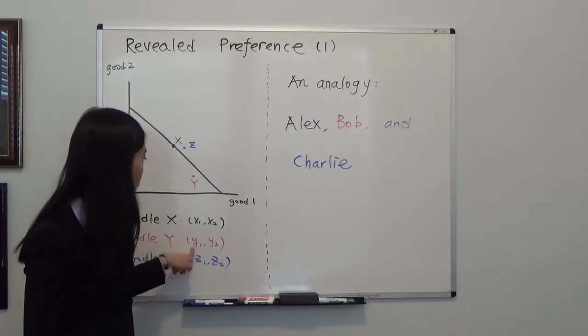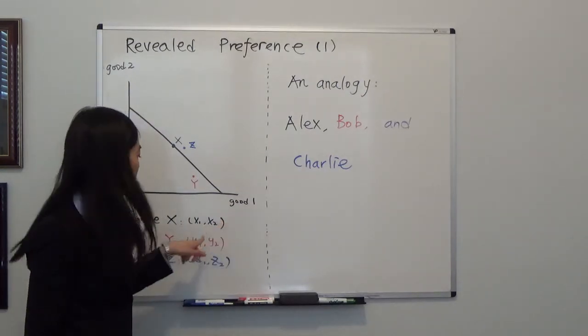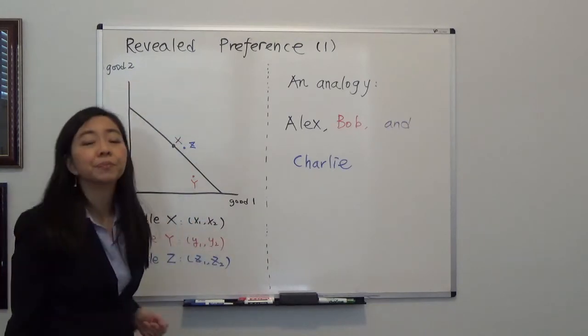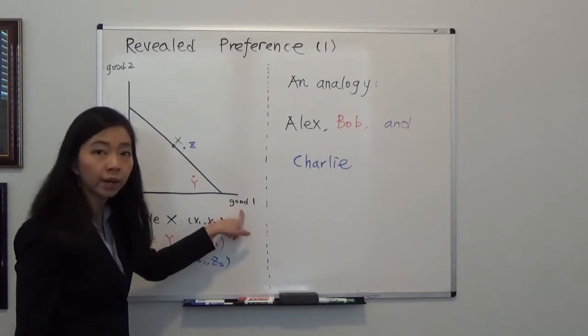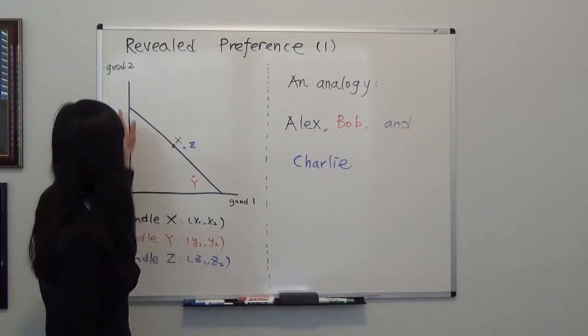Bundle Y has Y1 amount of good one and Y2 amount of good two. And bundle Z has Z1 amount of good one and Z2 amount of good two.